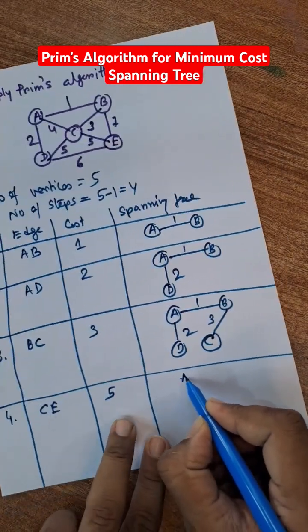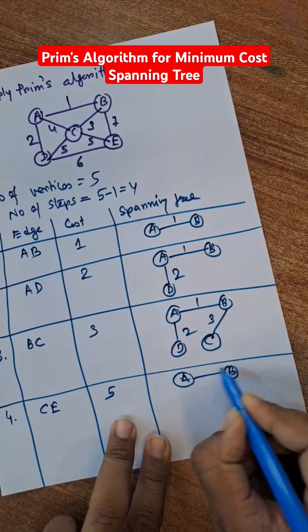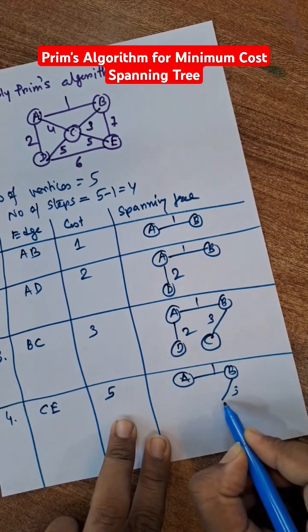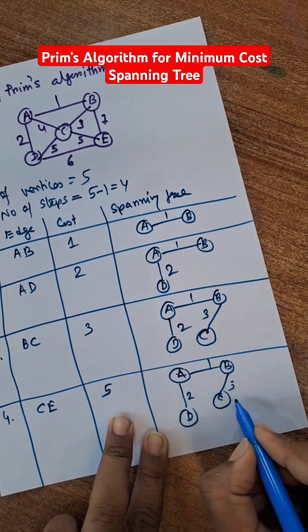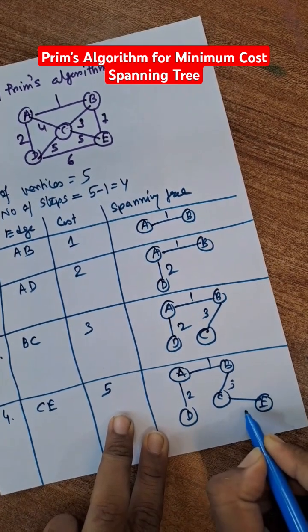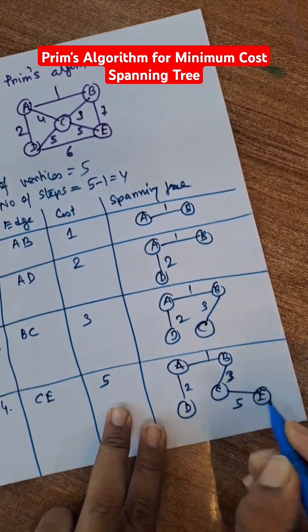AB is 1, BC is 3, AD is 2, and CE is 5. And this is the minimum spanning tree.